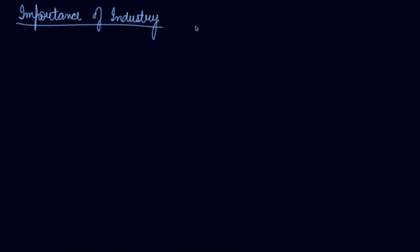We know the condition of the industrial sector on the eve of independence. It was actually a systematic de-industrialization. What the Britishers did was introduce industry according to their own benefit. They made India go from being an exporter of finished goods to an importer of finished goods, and shifted India from being an importer of raw material to an exporter of raw material.